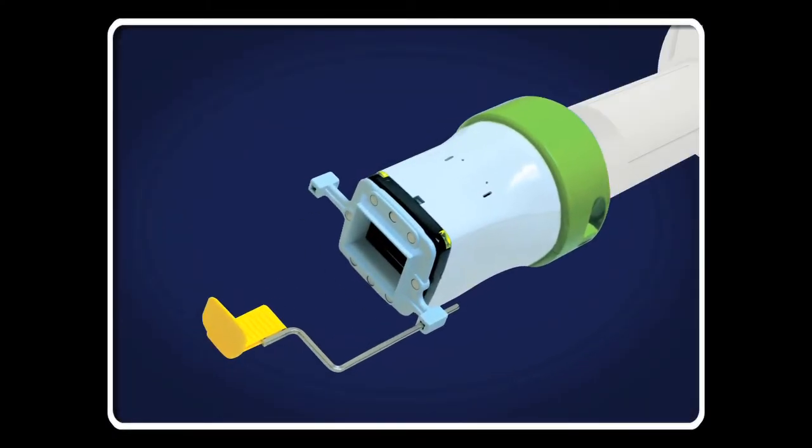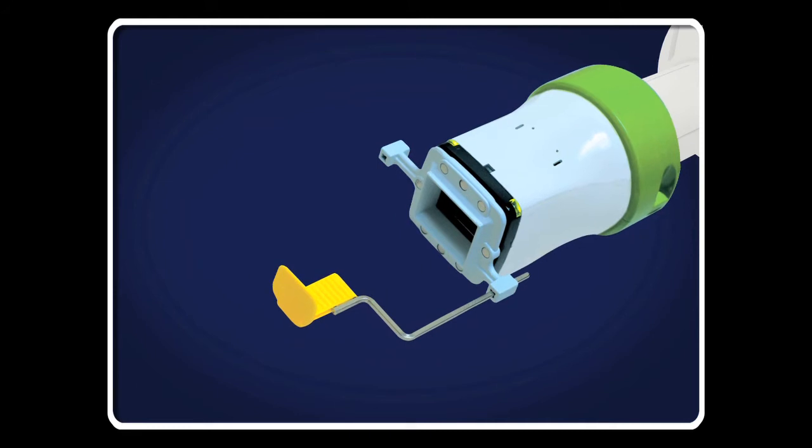TruAlign is a rectangular collimator that slides over the cone of your existing X-ray system to shape and control the size of the X-ray beam to the size of the receptor.